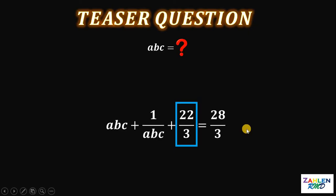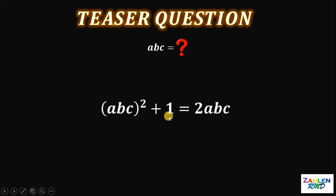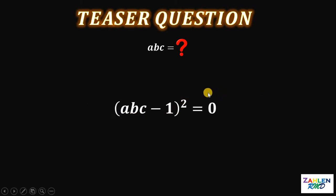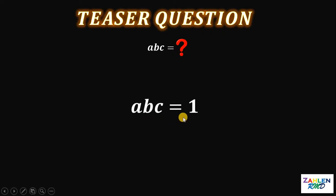Subtract 22 over 3 on both sides. We get ABC plus 1 over ABC equals 6 over 3, and 6 over 3 is just 2. To eliminate the fraction, multiply this equation by ABC. We get (ABC)² plus 1 equals 2 times ABC. Subtract 2 times ABC on both sides: (ABC)² minus 2·ABC plus 1 equals 0. The left-hand side factors as (ABC − 1)², and since it equals 0, ABC minus 1 equals 0, so the product ABC must be 1.